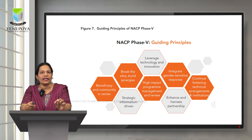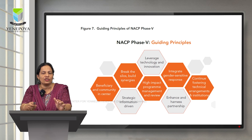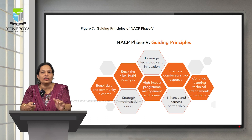NACP Phase 5 has eight guiding principles on which strategies are implemented: place beneficiaries and community at the centre; provide services as per requirements; break silos and build synergies through interdepartmental and intersectoral coordination; enhance and harness partnerships with various ministries and sectors; integrate gender-sensitive response focusing on women living with HIV AIDS and adolescents; leverage technology and innovation to promote updated services; use strategic information driven data for mid-course corrections; and continue fostering technical arrangements and institutions, developing a technical resource group to update policies and strategies.